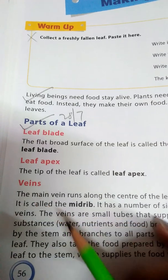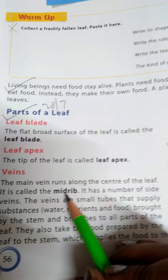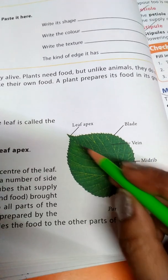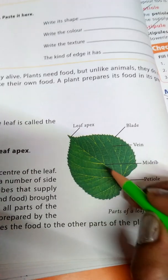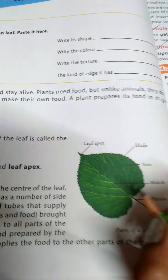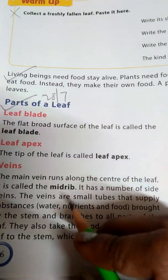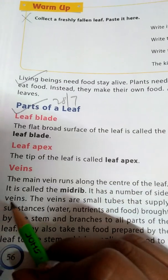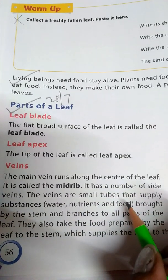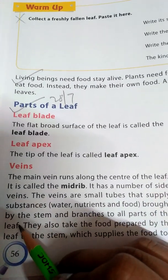Next is veins. The main vein runs along the center of the leaf — it is called the midrib. Here you can see the main vein; this is known as the midrib. All the other veins originate from this main vein, so the leaf has a number of side veins.